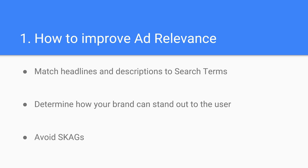First off, you can improve your ad relevance. Ad relevance is a major component of your ad rank and one of the three components that comprise ad quality or quality score. According to Google's official definition, ad relevance is how closely your ad matches the intent behind a user's search. Start by auditing your current ad copy and cross-referencing those keywords against what you're bidding on — do your headlines and descriptions include keywords that users are actually searching for? Responsive search ads are a great way to test different copy to determine what resonates best with the user.